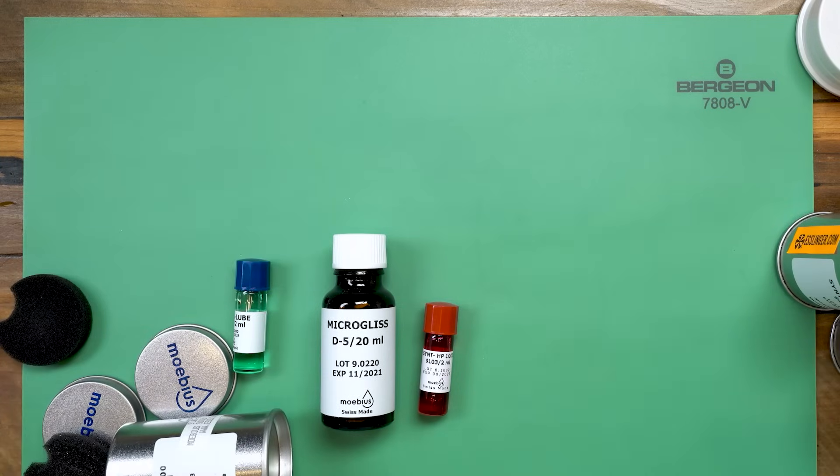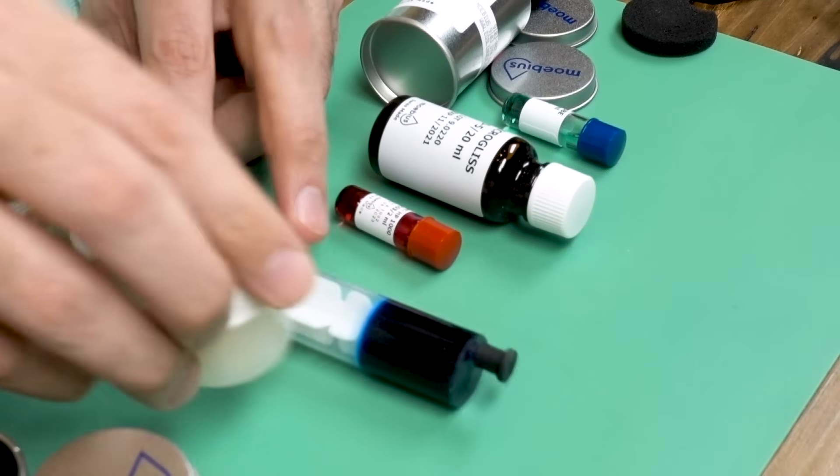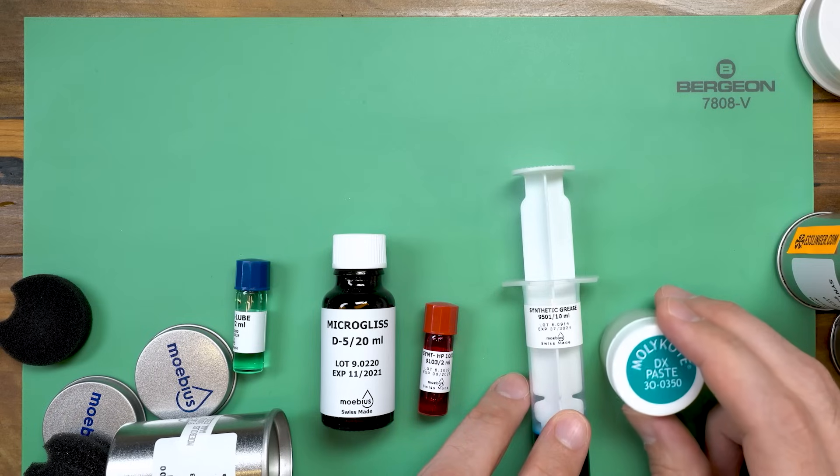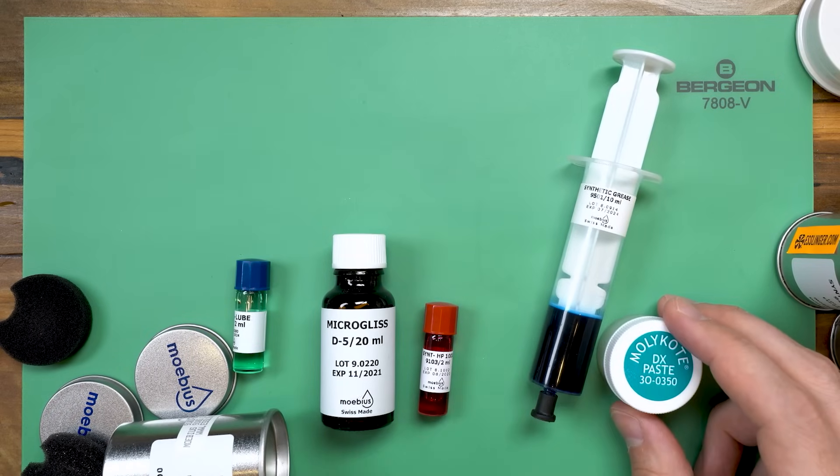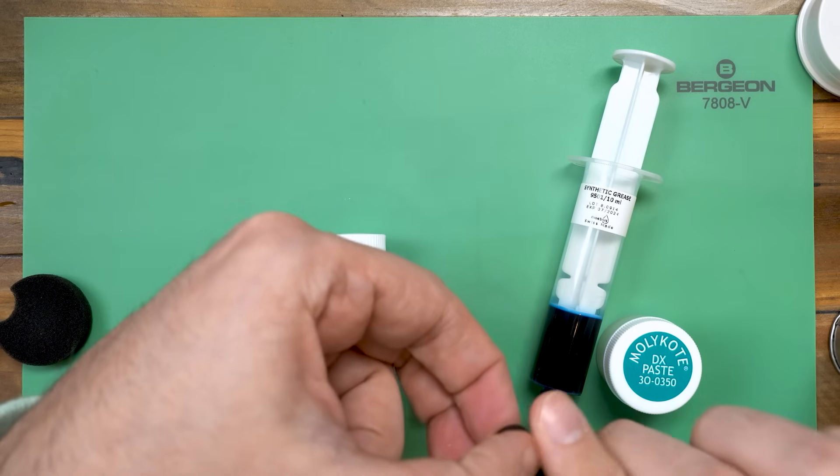And you'll want Mobius 9501, which is $70, or Moly Coat DX, which is about $13. These are grease that you can use for heavy viscosity applications. The last you'll need is Mobius 9415, which is about $39 for the pallet jewels.